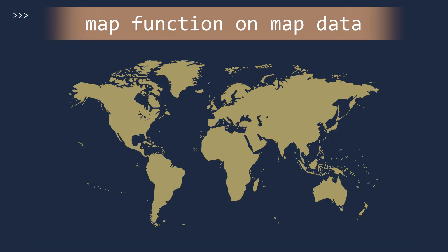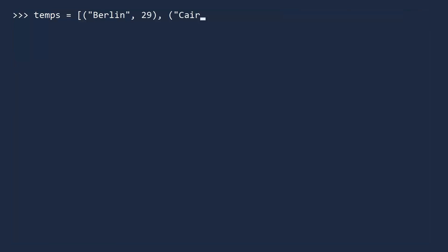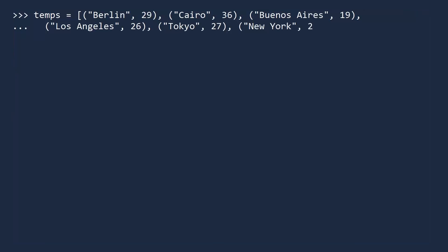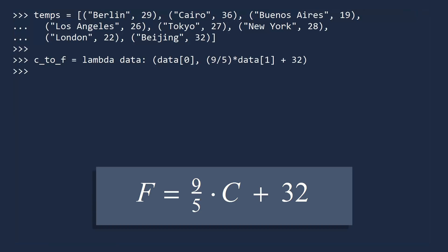Suppose you work for a weather reporting service and all of your temperature data is stored in Celsius. Then, unexpectedly, someone asks for a weather map in Fahrenheit. We live to serve the user. Here is a list of temperature data for some major cities around the world. Each tuple contains the name of the city in English and the temperature in degrees Celsius. Our goal is to convert this to a list where the degrees are in Fahrenheit. We will write a converter function using a lambda expression that accepts a tuple as input and returns a tuple with the same name but the temperature in Fahrenheit. You can now create a list of data in Fahrenheit by mapping the converter function to our list of temperature data. Do not forget your jacket if you are visiting Argentina.